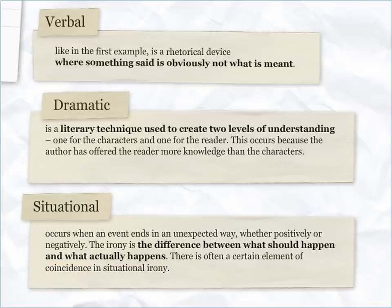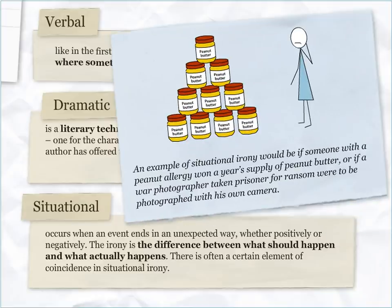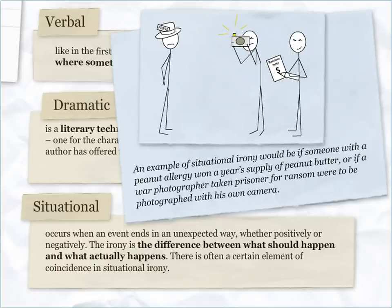Situational irony occurs when an event ends in an unexpected way, whether positively or negatively. The irony is the difference between what should happen and what actually happens. There is often a certain element of coincidence in situational irony. An example would be if someone with a peanut allergy won a year's supply of peanut butter, or if a war photographer, taken prisoner for ransom, were to be photographed with his own camera.